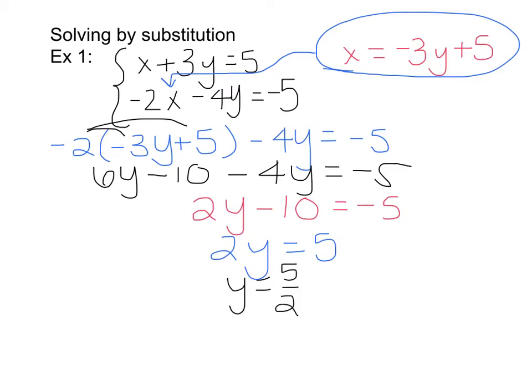Remember in section 3-1 when we were graphing these, the point of intersection of your two lines was where the solution came from. Now I have to take what y equals and substitute it in for the variable I solved for so I can find what x equals. Plugging your y value into the solved equation is easiest, but you could substitute y into your first or second original equation and get the same answer.